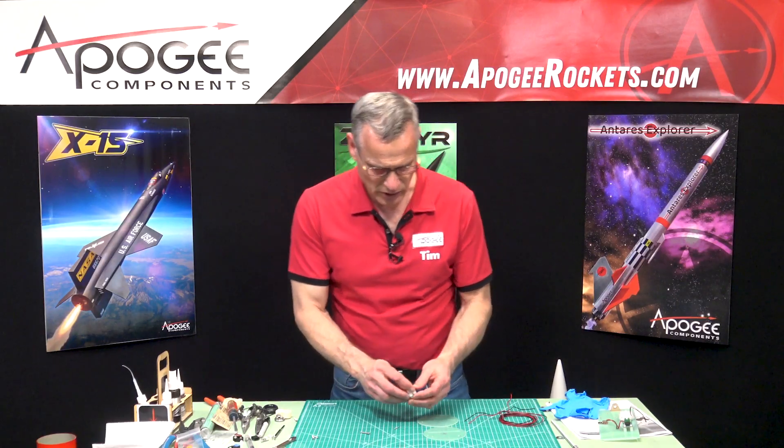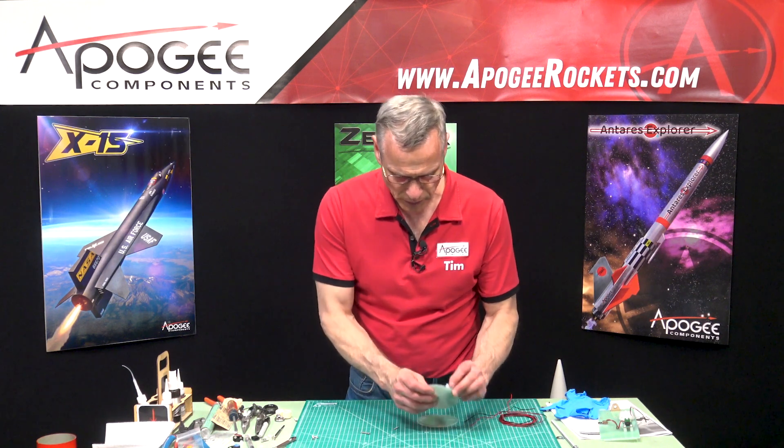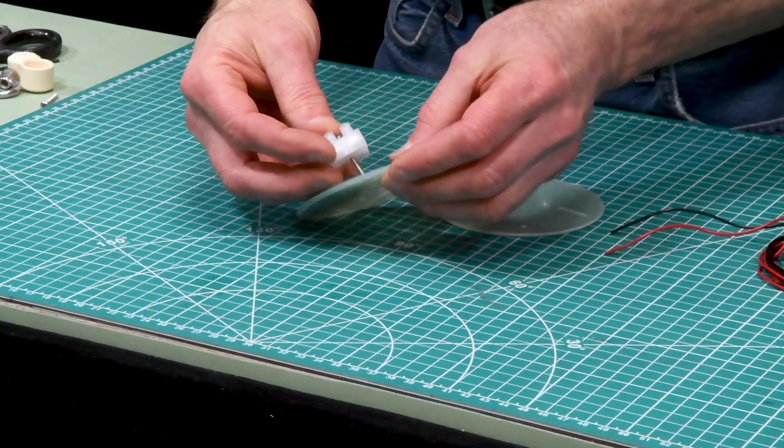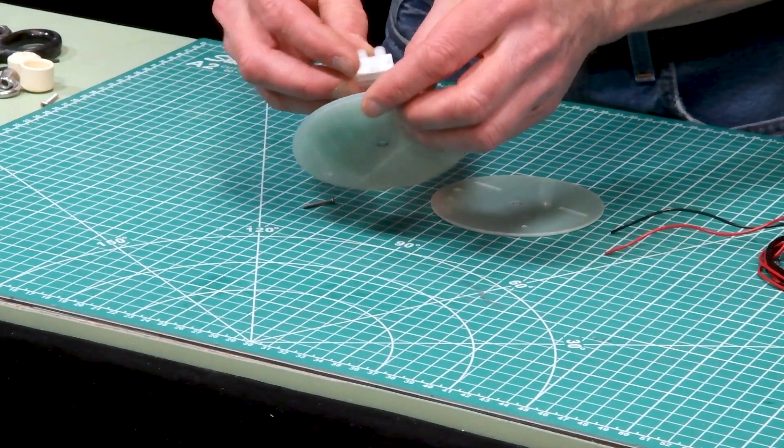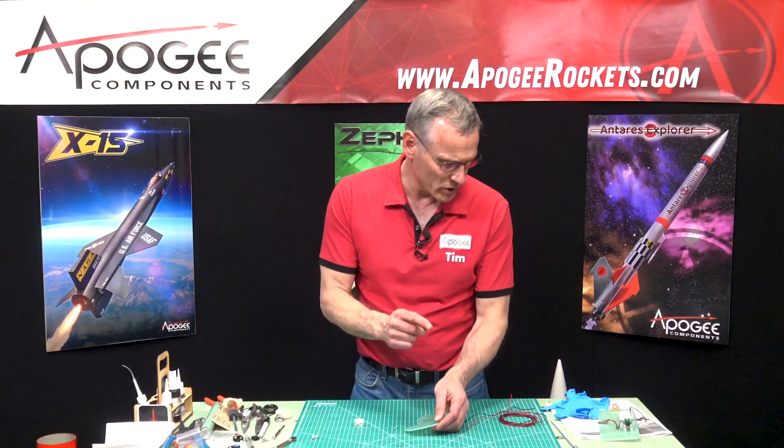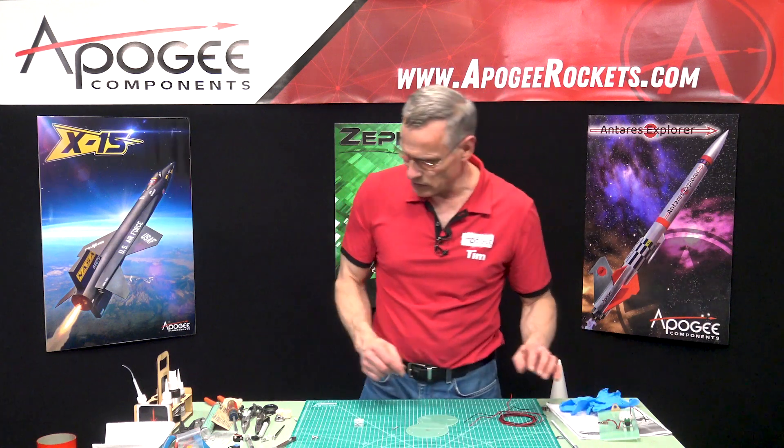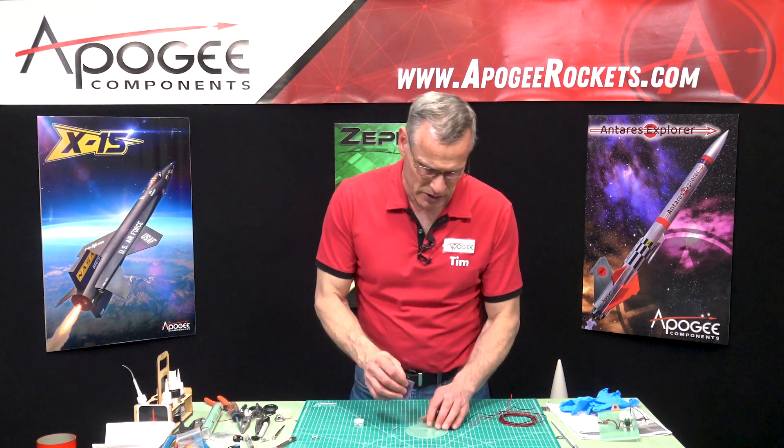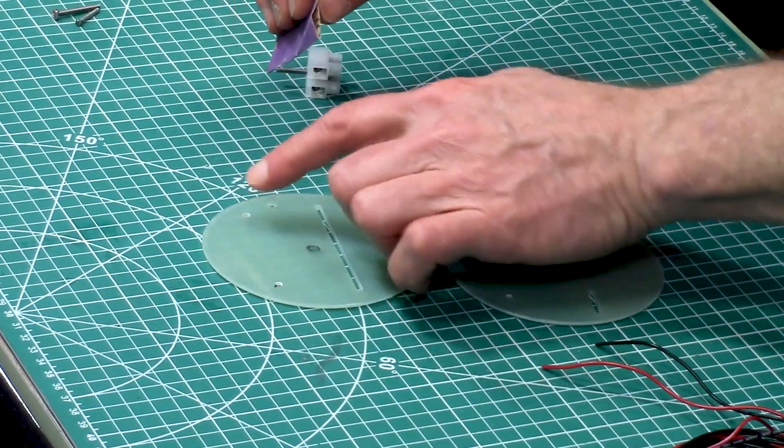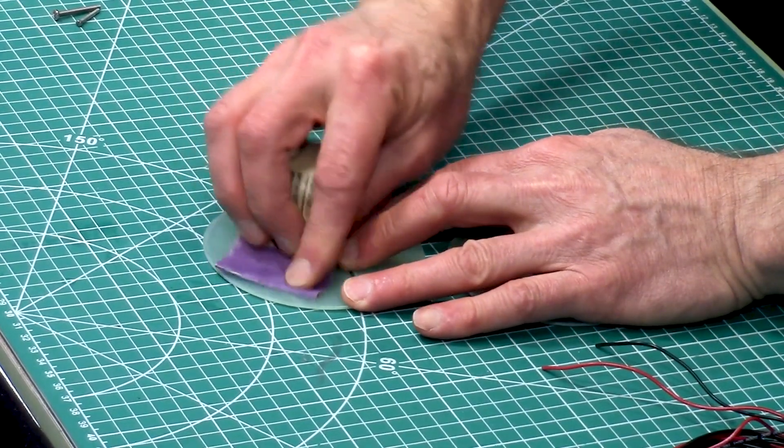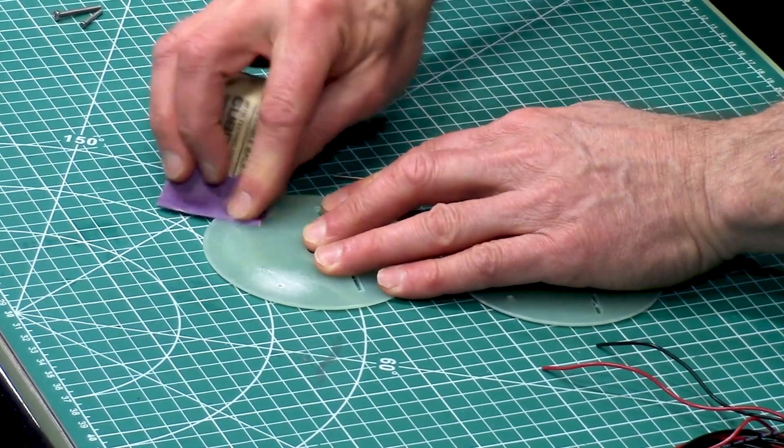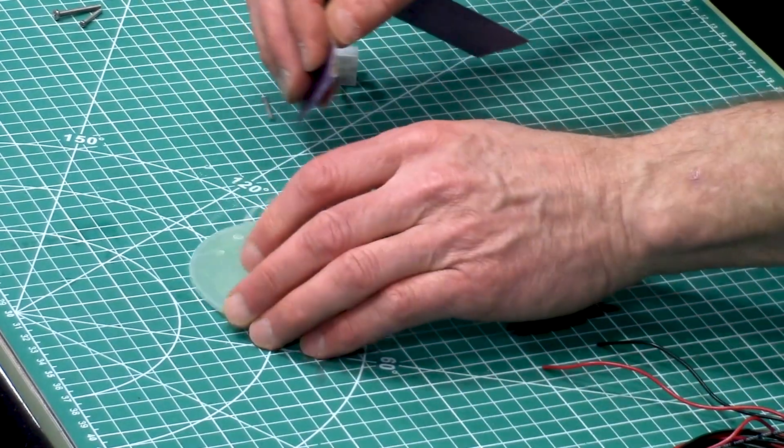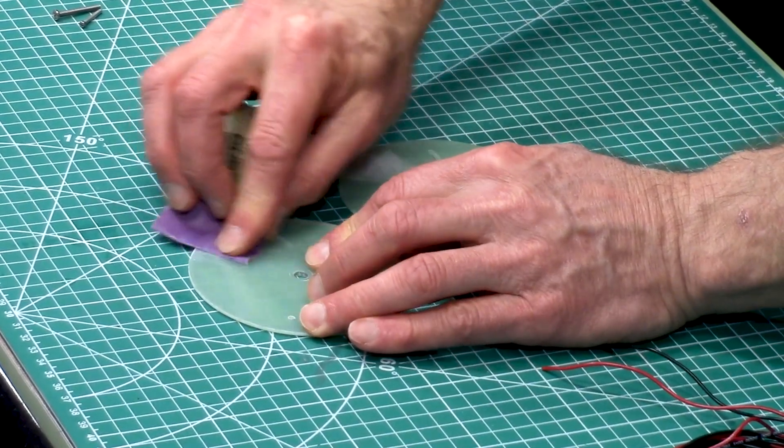Our next step is we're going to put on our terminal block and that's the 440 screw. I want to start putting some epoxy on, and because of that I'm going to need to scuff up these again. So I'm going to scuff up these two holes so that the epoxy will stick better, and the same thing on this other bulkhead.